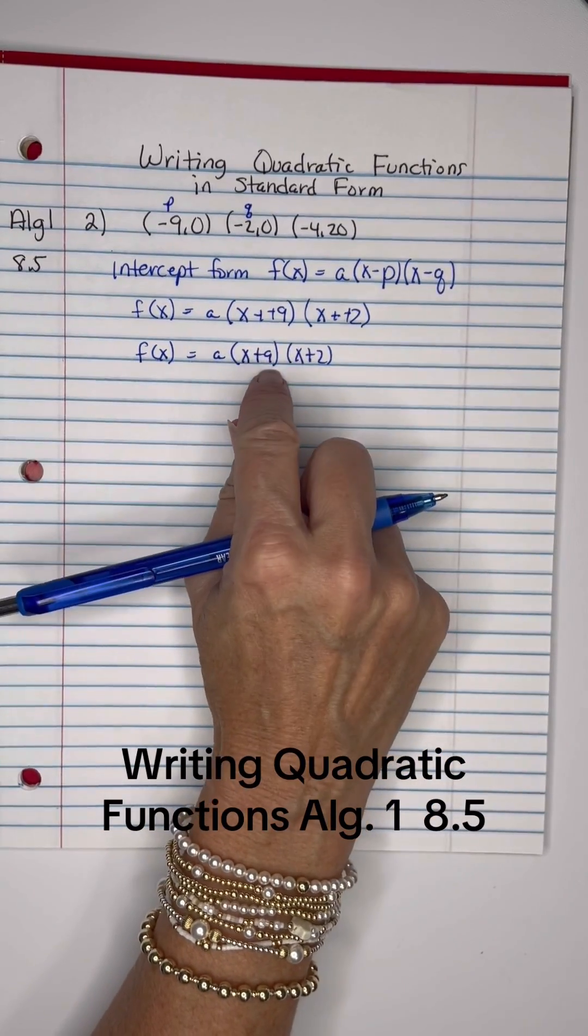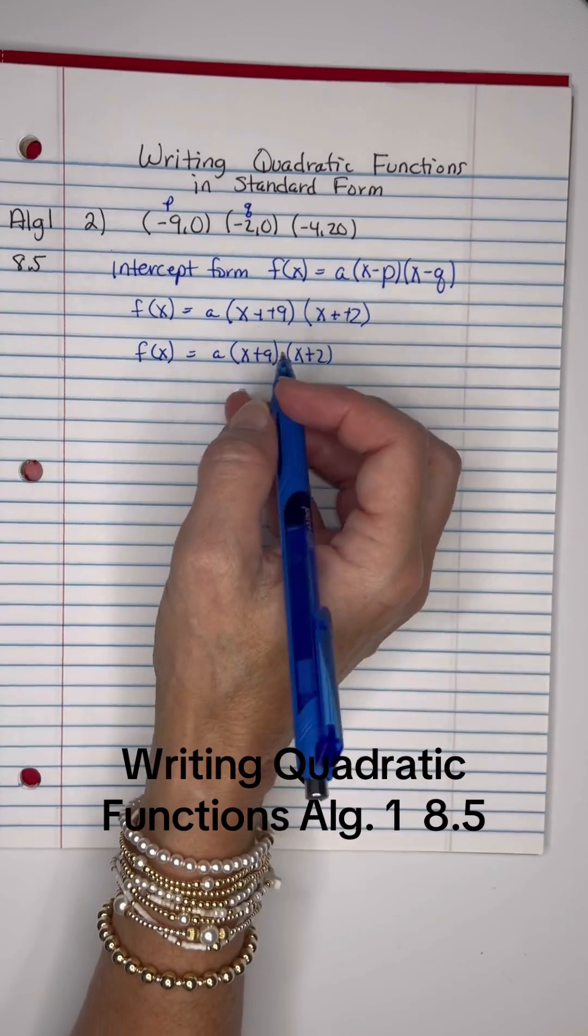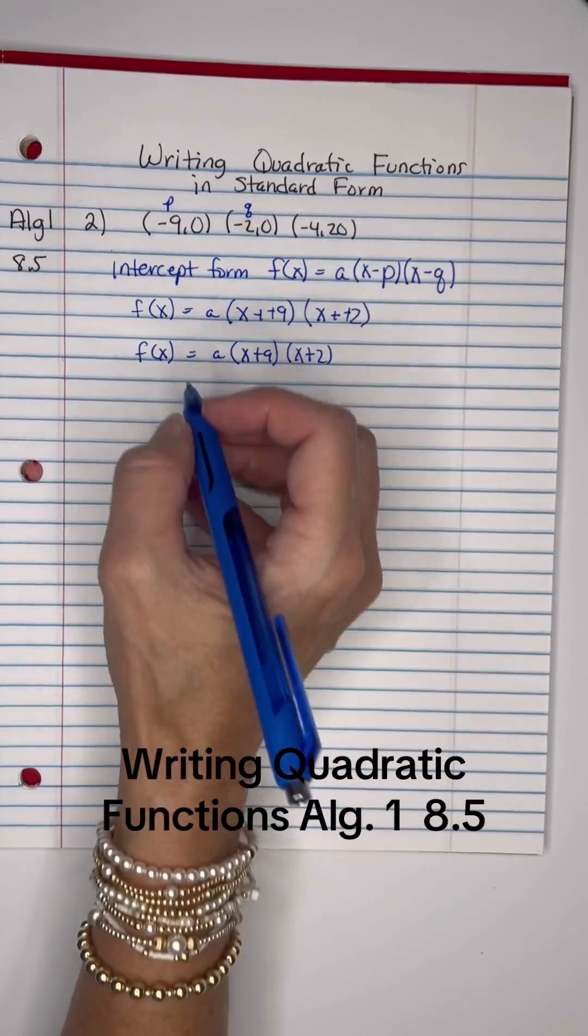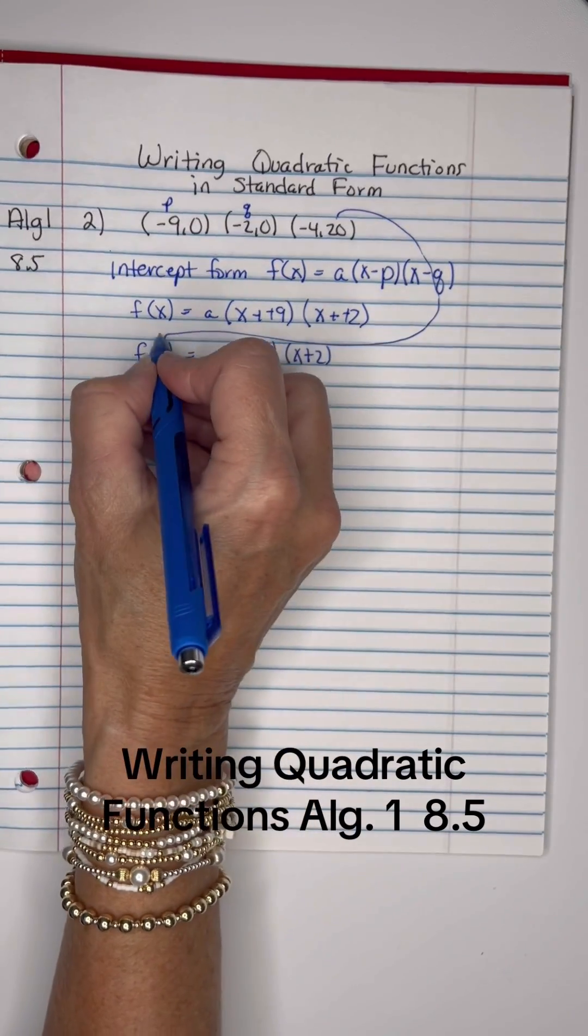All right, using that and this point right here, I'm going to put – let's say the f(x) would have to be 20, so I'm taking this right here and I'm placing it here.